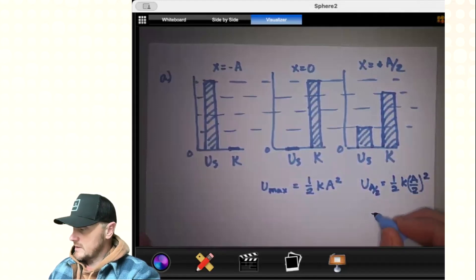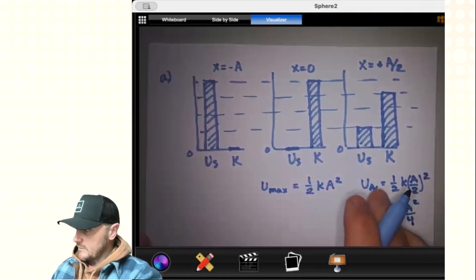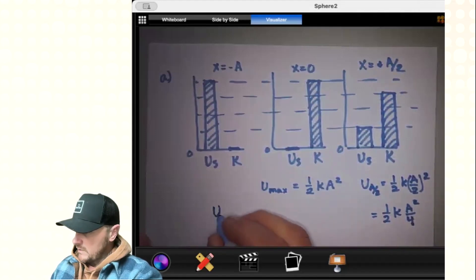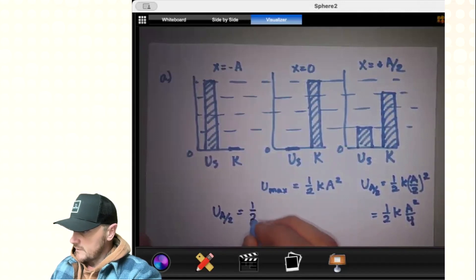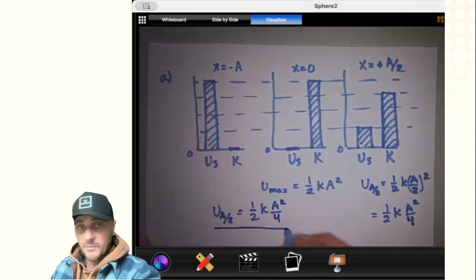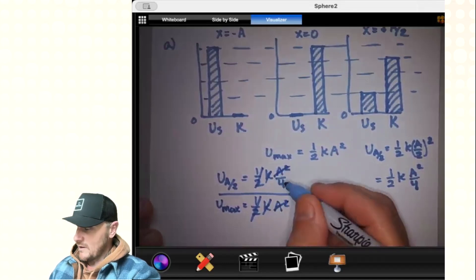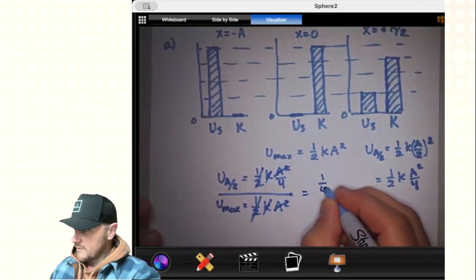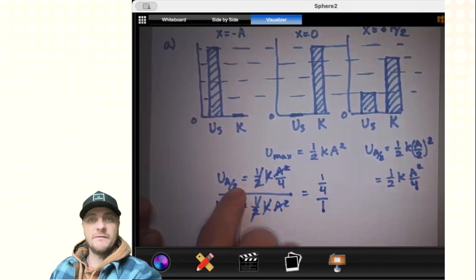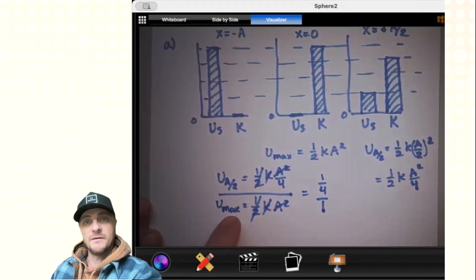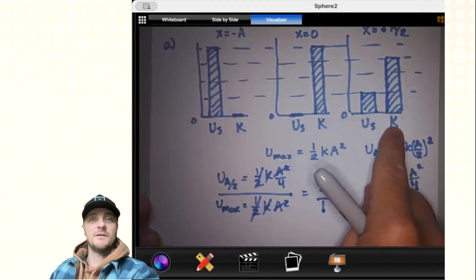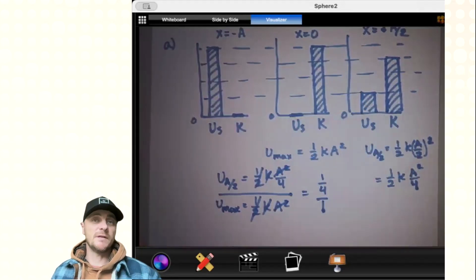So now I get one half k a squared over four. If I took both of these and divided them, I'll say a divided by two, which was one half k a squared over four, over my u max. These halves cross out, this k crosses out, the a squared crosses out. I get one fourth to one. I have a quarter of the energy at a divided by two compared to my energy when I'm at maximum amplitude on either side of equilibrium. That's why we have a quarter of the energy, which means the other three quarters must be in the form of kinetic energy. You didn't have to show that justification but I want you to understand why.